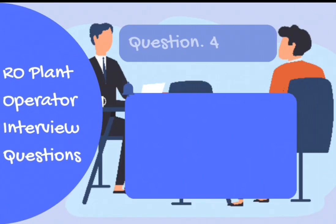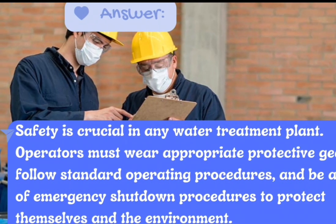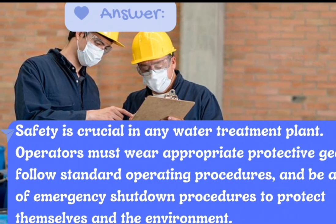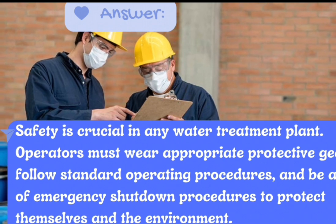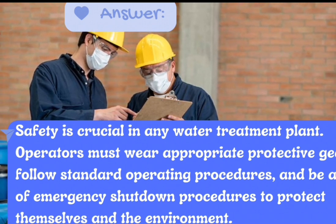Question number 4: What safety measures should an RO plant operator follow? Answer: Safety is crucial in any water treatment plant. Operators must wear appropriate protective gear, follow standard operating procedures, and be aware of emergency shutdown procedures to protect themselves and the environment.